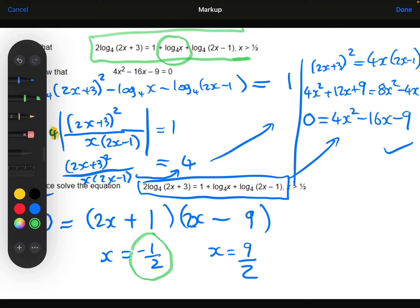I can't have log of minus 1 half. This is not a valid solution, which also makes sense considering they've told us that x has to be greater than a half. But the 9 over 2 is absolutely fine. You can substitute 9 over 2 into all of those logarithms and you won't get a negative. So the only answer to this question is 9 over 2.